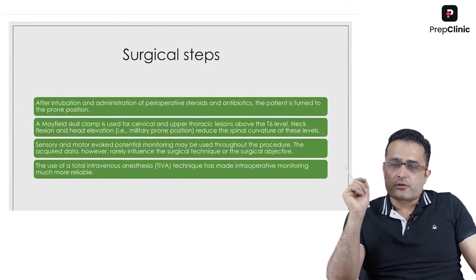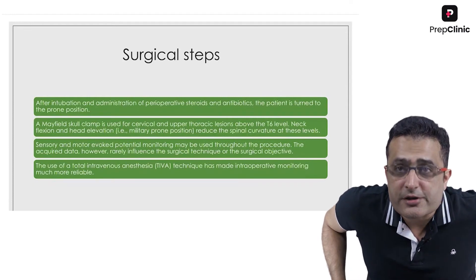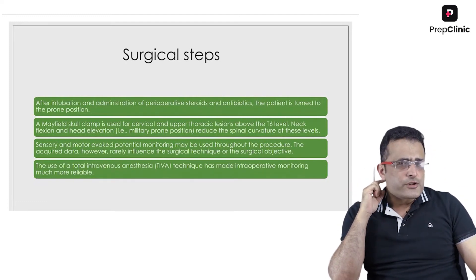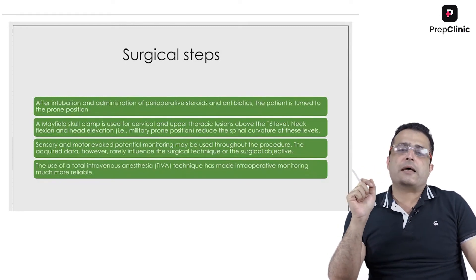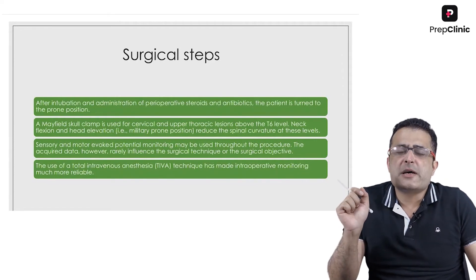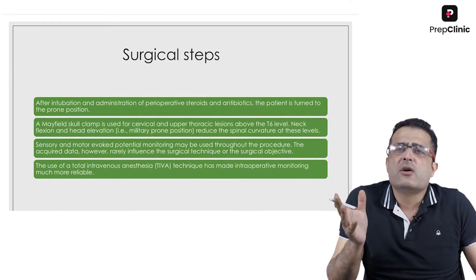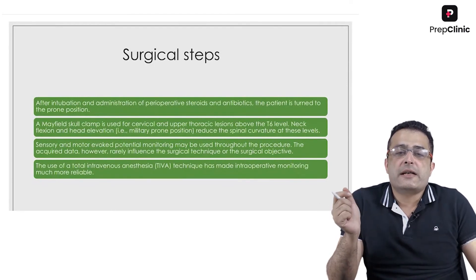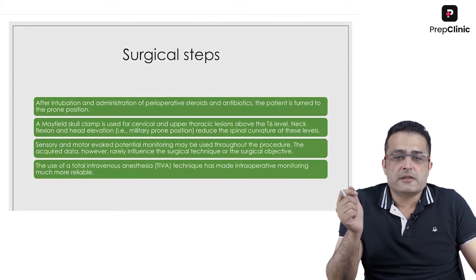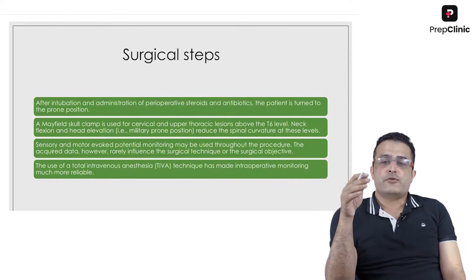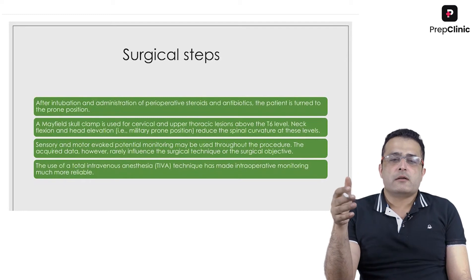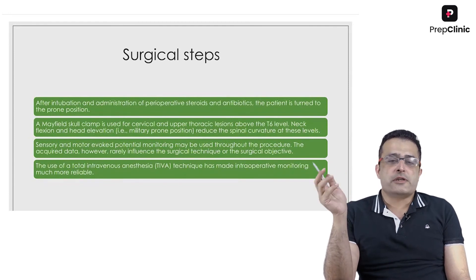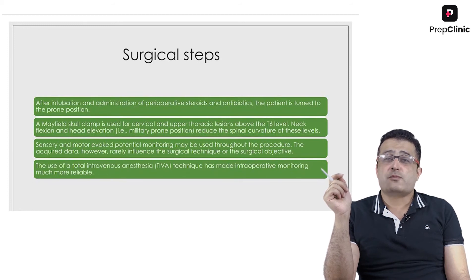Important surgical steps for intramedullary spinal cord tumors include endotracheal intubation, administration of perioperative steroids and antibiotics, and positioning the patient prone. All pressure points must be adequately padded, the eyes protected throughout the procedure, and rigid skull fixation — such as a Mayfield or Sugita head clamp — used for cervical and upper thoracic tumors above T6. Adequate neck flexion and head elevation reduce spinal curvature. Sensory and motor evoked potential monitoring should be used throughout, and total intravenous anesthesia has made intraoperative monitoring much more reliable.